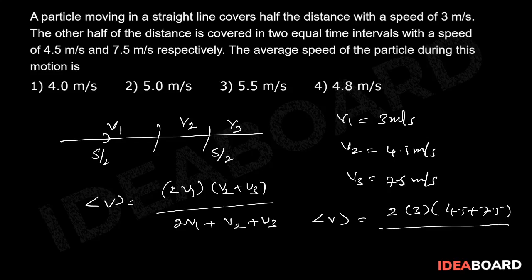Then the average speed equals 2 into 3 into (4.5 plus 7.5) divided by (6 plus 4.5 plus 7.5) which equals 6 into 12 divided by 18. So we get 4 meter per second.